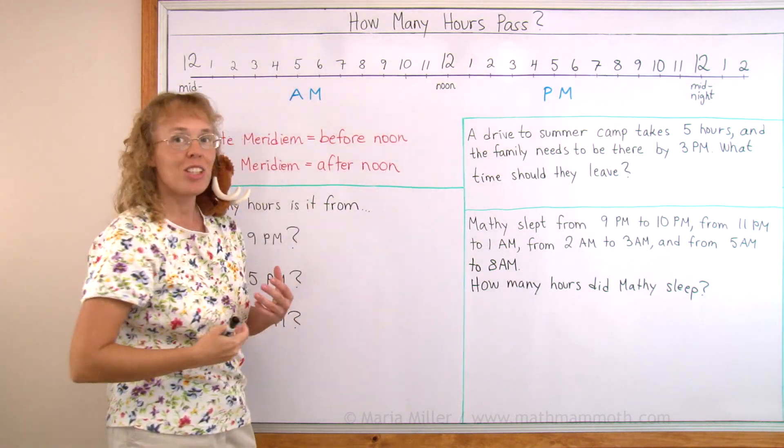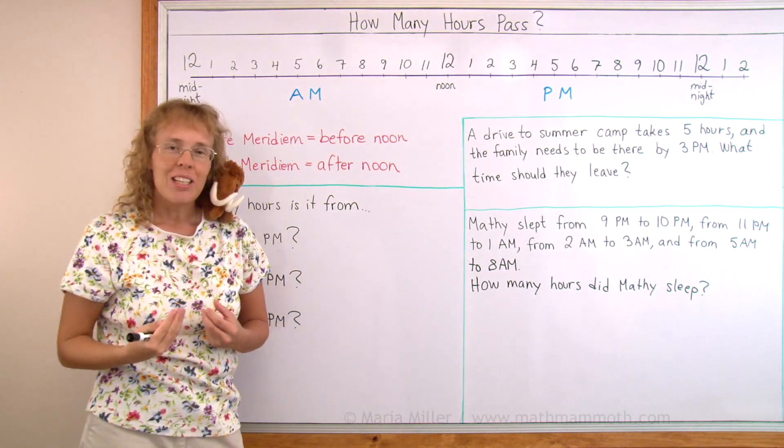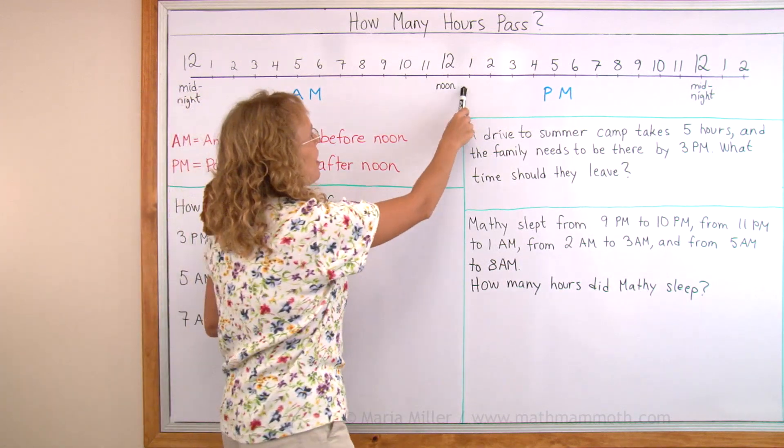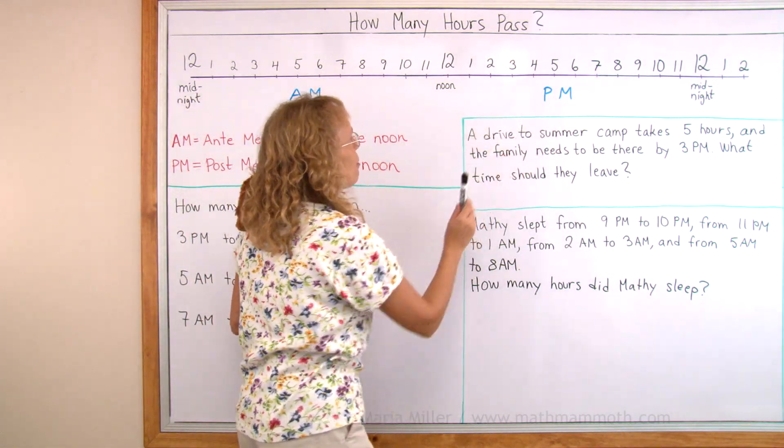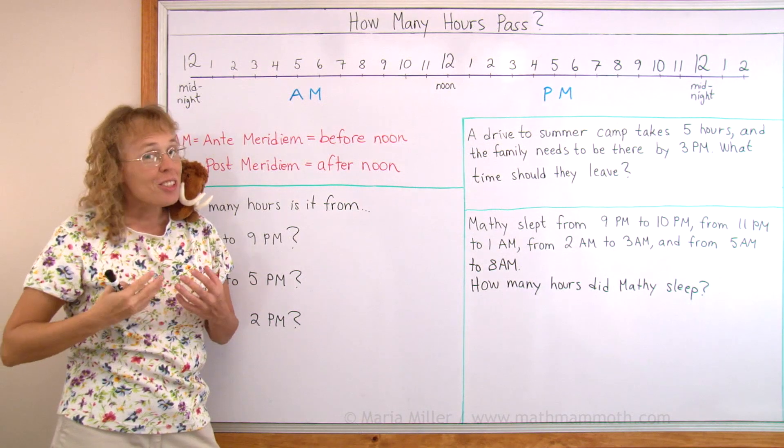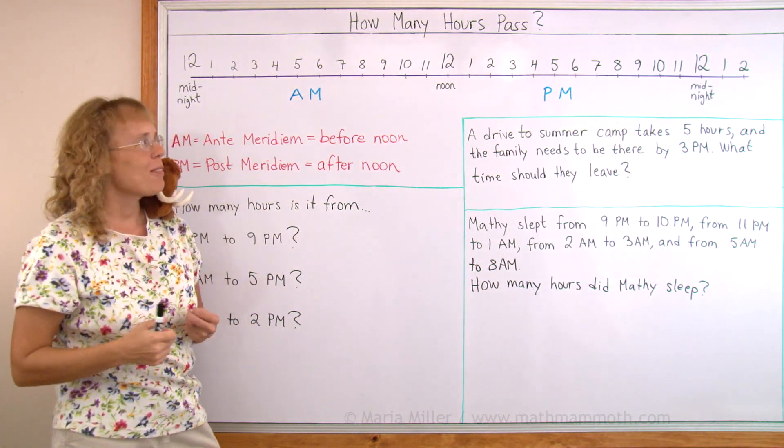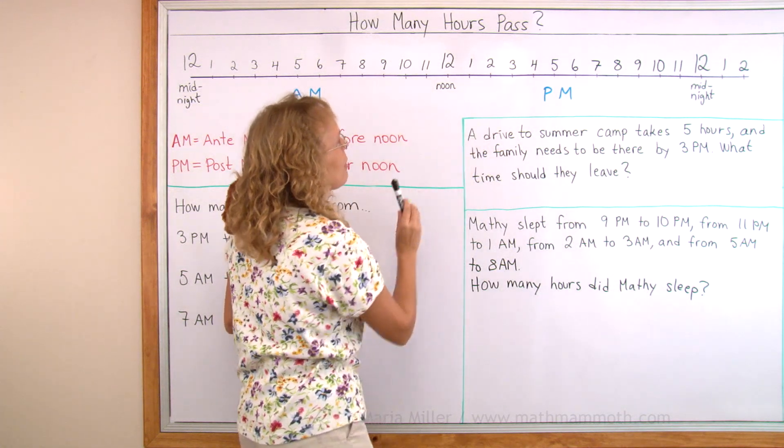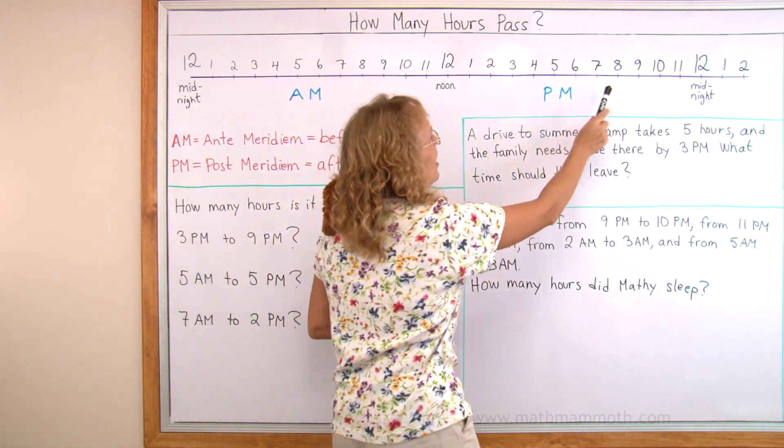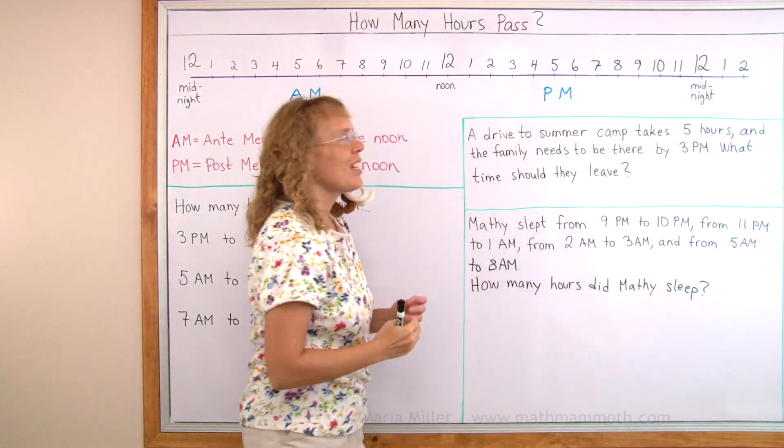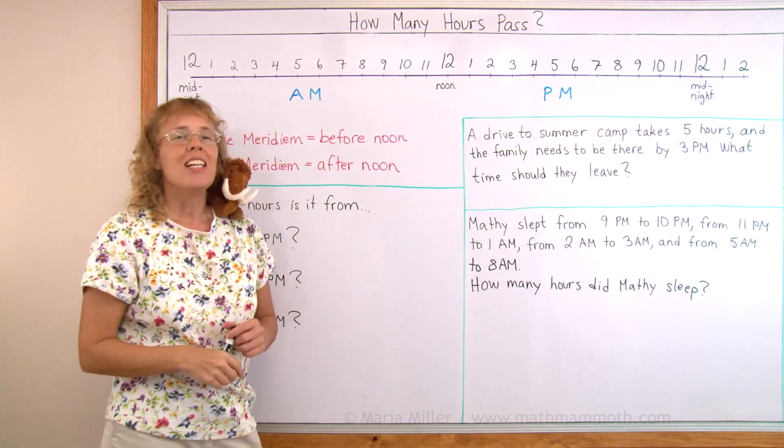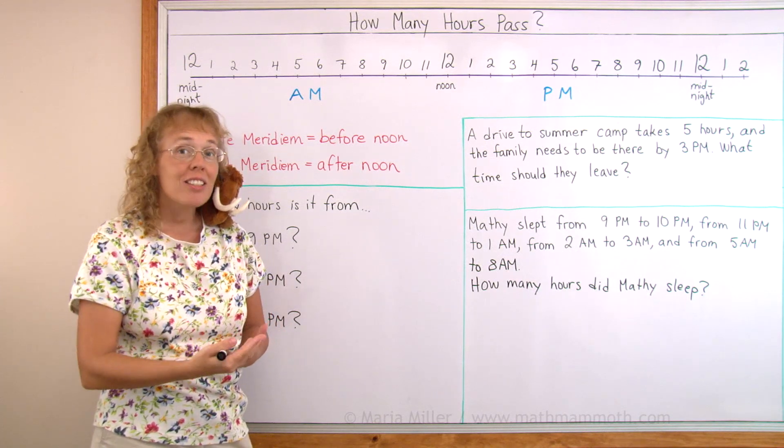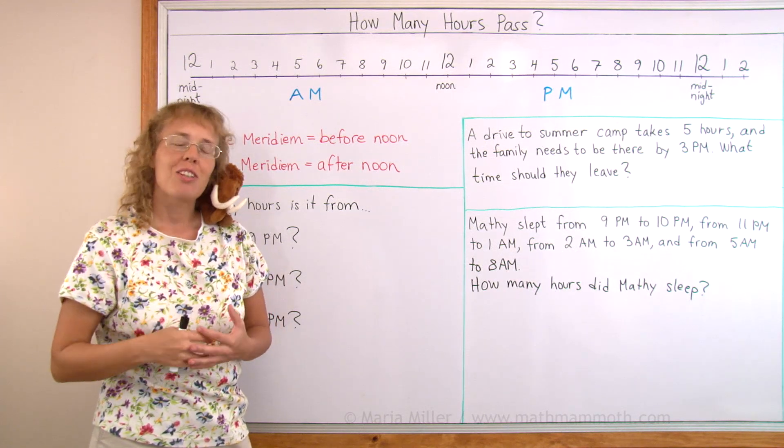And then comes 12 o'clock noon, the midpoint of the day when the sun is at its highest point. After that the hours are called PM, which means afternoon or post meridiem from Latin. So this hour is 1 PM, 2 PM, 3 PM and so on all the way up till 11 PM. And then we have 12 midnight again and we start that cycle again. So in this complete day and night period we have 12 hours and 12 hours or a total of 24 hours.